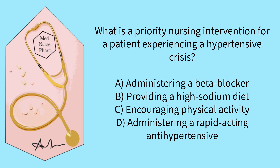What is a priority nursing intervention for a patient experiencing a hypertensive crisis? Options: administering a beta blocker, providing a high sodium diet, encouraging physical activity, or administering a rapid acting anti-hypertensive?